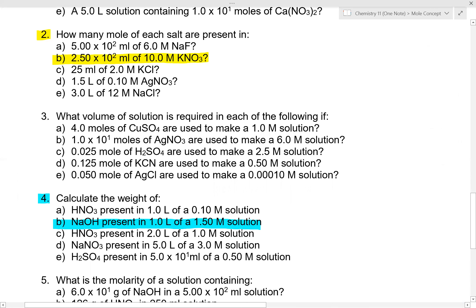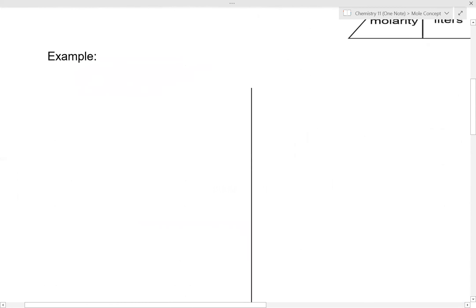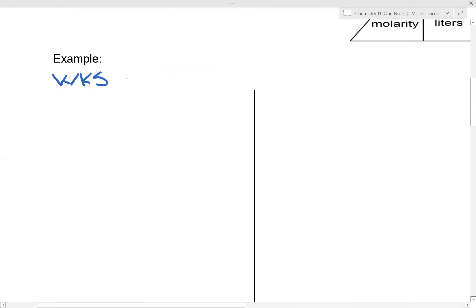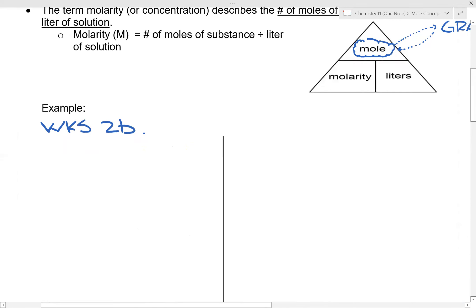Let's take a look at question 2b. So my example here, worksheet 2b, says: How many moles of each salt are present in 2.5 times 10 to the 2 milliliters of 10 molarity KNO3? What I want to do is calculate the number of moles. If we look at the triangle, we know that moles equals molarity times volume.